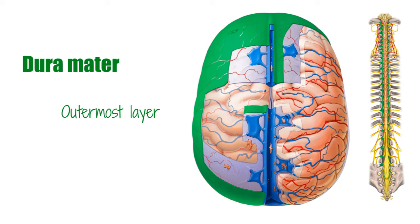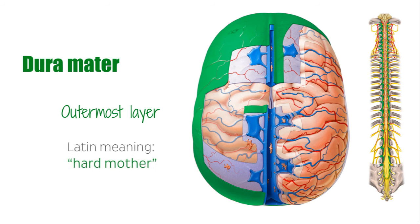You might be interested to know that the name dura mater comes from the Latin meaning 'hard mother,' due to the fact that it is the thickest and toughest of the three membranes that cover the brain and the spinal cord.